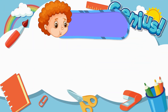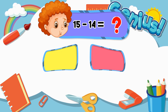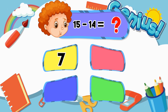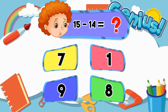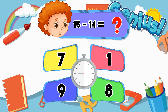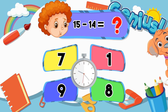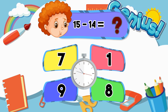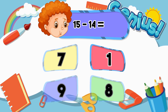What is fifteen minus fourteen? Seven. One. Nine. Eight. One. Ten.